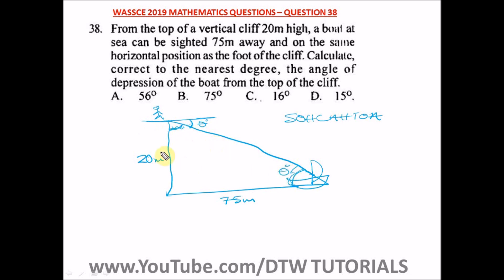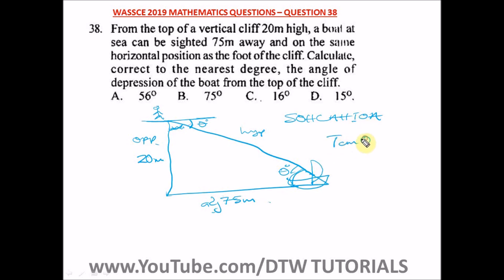We have two sides, so it's easy to find theta. The vertical side (20m) is our opposite, the horizontal side (75m) is our adjacent, and the line of sight is the hypotenuse. Since we have opposite and adjacent, we use tan: tan θ = 20 over 75.